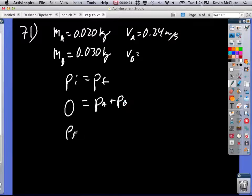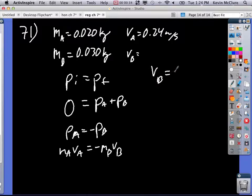So you're going to get the momentum of A equal to the negative momentum of B. So then MA VA is equal to negative MB VB. So VB is equal to negative VA times MA over MB.